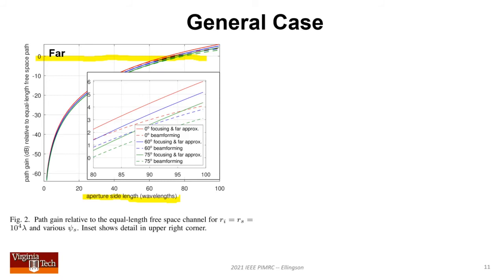We start at 10,000 wavelengths distance. Since maximum surface size considered is 100 wavelengths across, this very obviously falls into far case regime. You see very little difference between focusing, beamforming, and far case approximation prediction. Nevertheless, focusing always performs better than beamforming, although marginally here. This is expected.